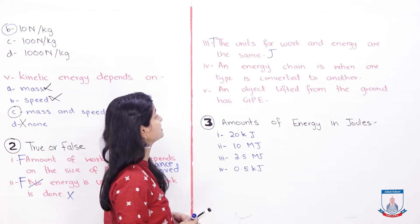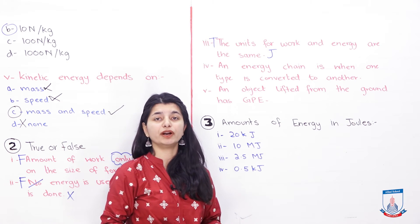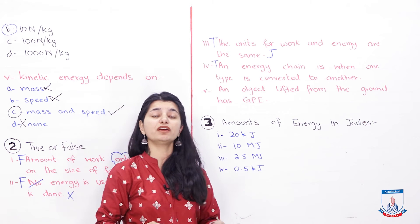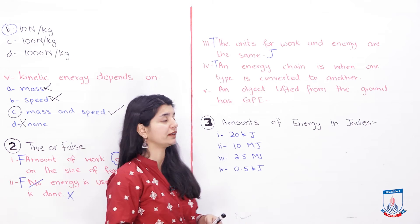When one type is converted to another, in the energy chain, one form of energy is converted. Again, this is true. That is right. When you change energy from one form to another form, then you get an energy change.